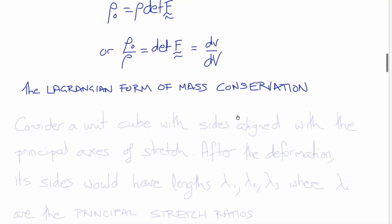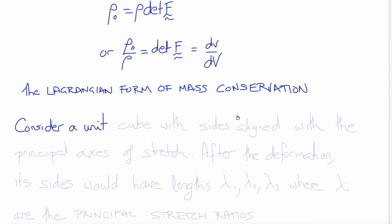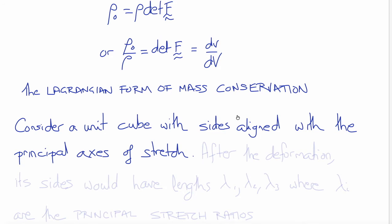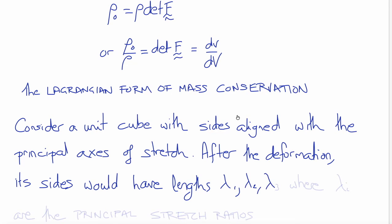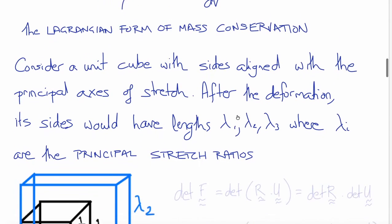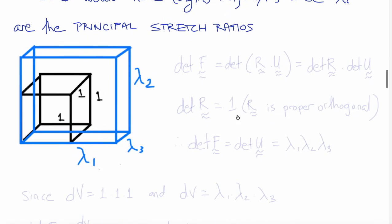To illustrate this, let's consider a unit cube whose sides are aligned with the principal axes of stretch. After the deformation, the sides would now have lengths lambda_1, lambda_2, and lambda_3, which are the three eigenvalues of the stretch tensor U — so they are the principal stretches. As we see in the diagram, the original unit cube now has dimensions lambda_1, lambda_2, and lambda_3.